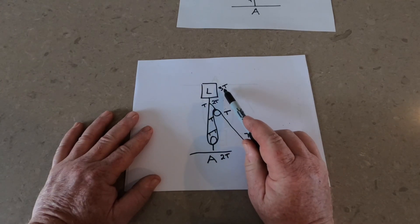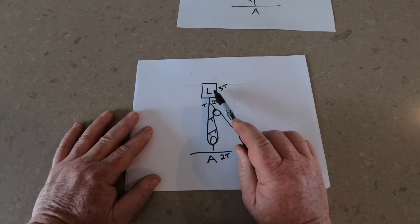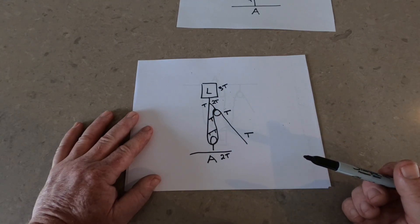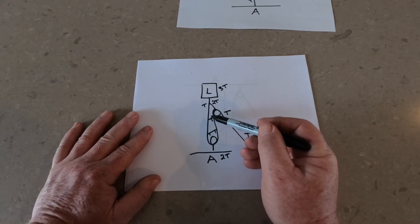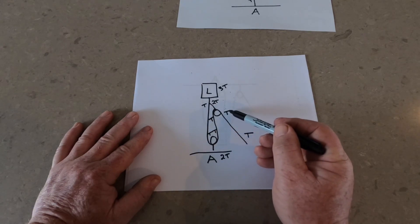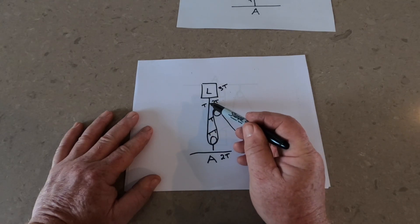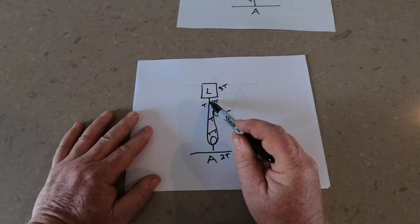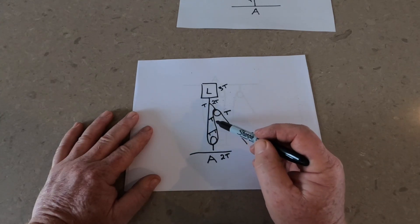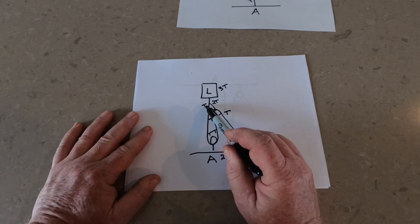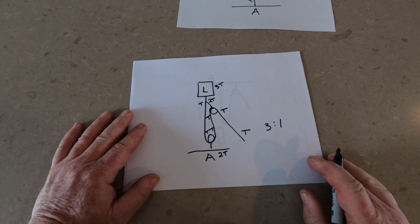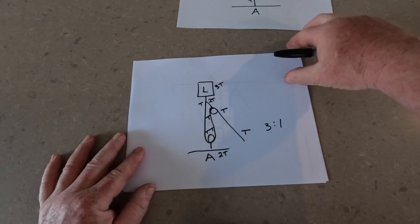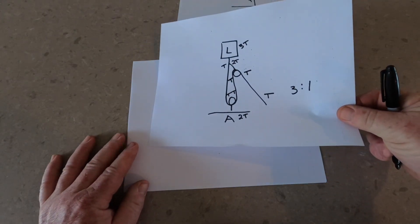The final output at the load is what we're looking for. One input goes around the pulley, both strands act as 2T on the rope grab, the rope comes around with 2T at the anchor, and then the 1T adds into the 2T to give you 3T at the load. This is a 3-to-1 mechanical advantage system.